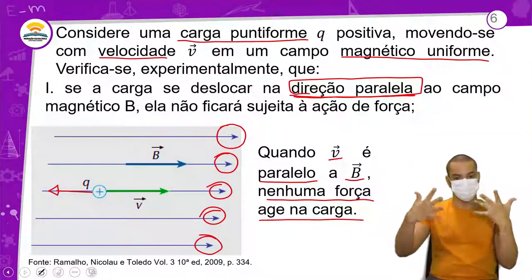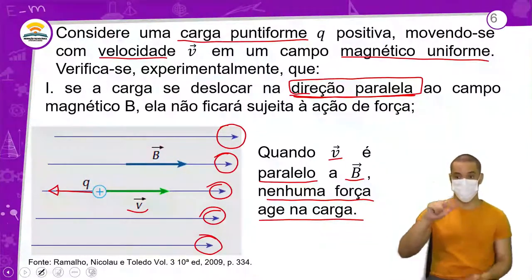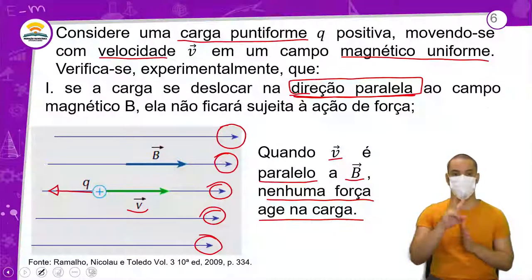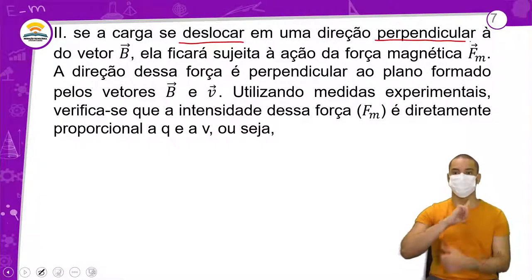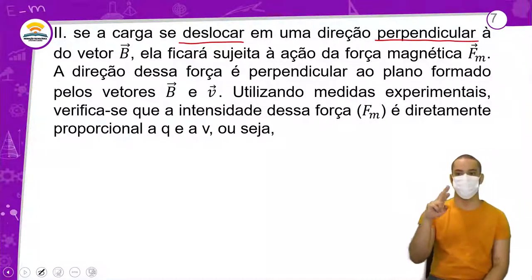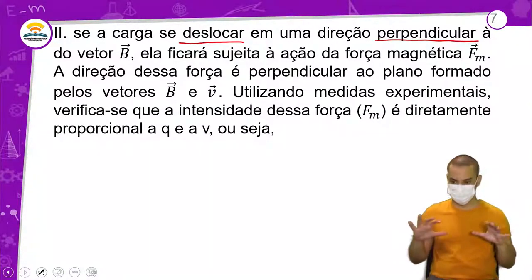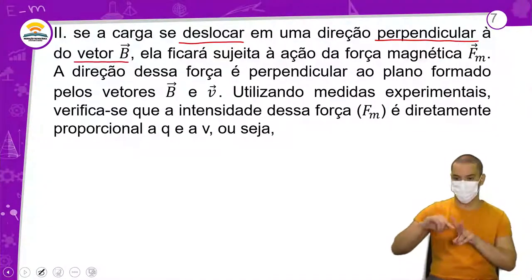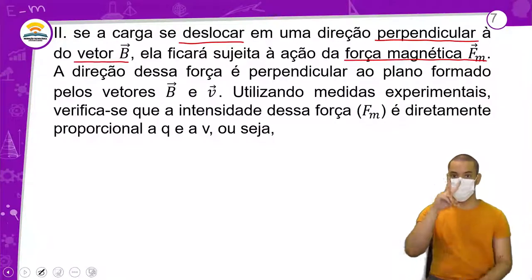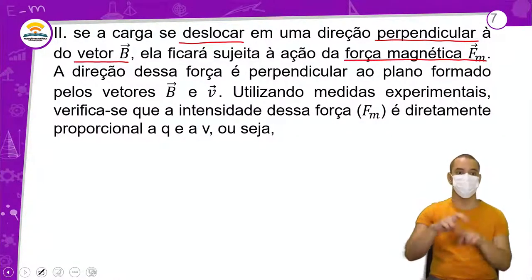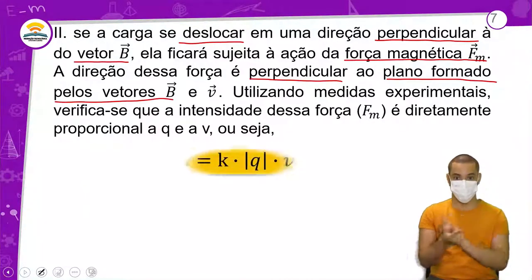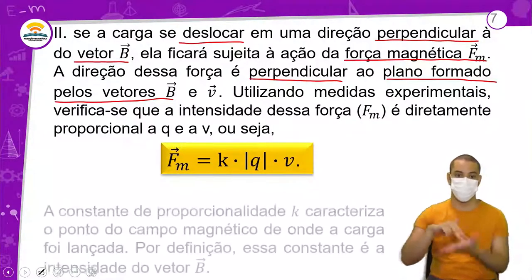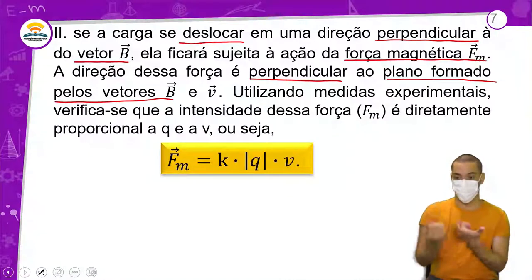Segundo caso: se a carga se deslocar em uma direção perpendicular — fazendo um ângulo de 90 graus — ao vetor B, ela ficará sujeita à ação da força magnética F. A direção dessa força é perpendicular ao plano formado pelos vetores B e V. Utilizando medidas experimentais, verifica-se que a intensidade dessa força é diretamente proporcional ao valor da carga e à velocidade.